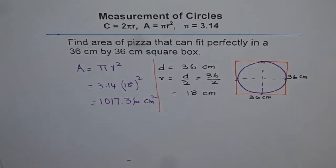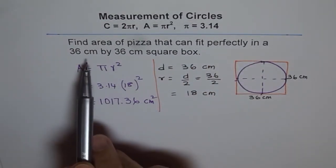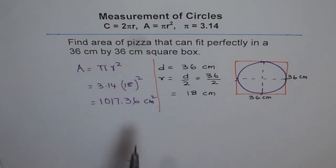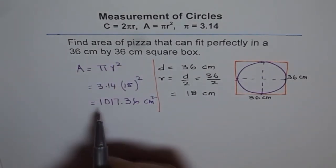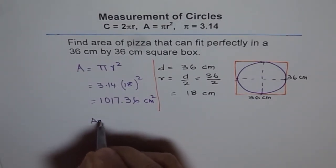So the area of pizza that can fit perfectly in 36 cm by 36 cm square box is approximately 1017 cm square. So that becomes our answer.